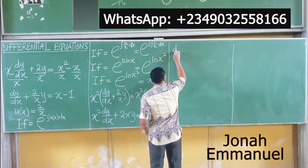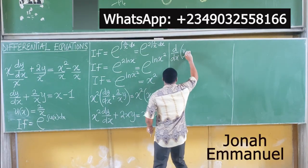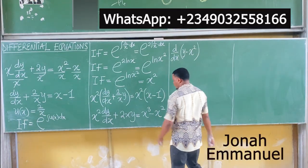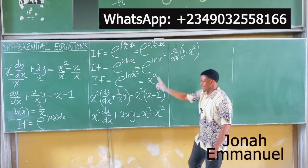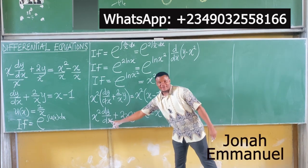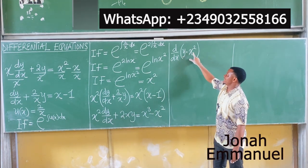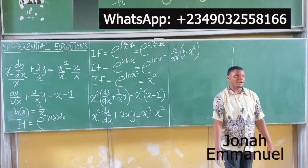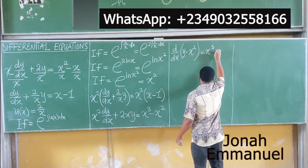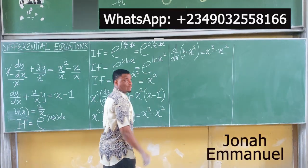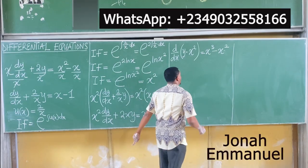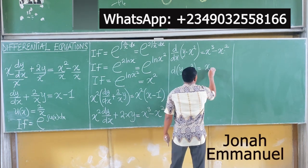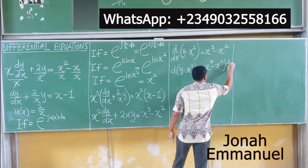For this, we use the concept: the left side is the derivative d/dx of y times the integrating factor, which is x squared. Looking at it: v times du/dx plus u times dv/dx — where u is y and differentiating x squared gives 2x — so d/dx of y times x squared equals x cubed minus x squared. Now move dx over: d(y · x²) equals x cubed minus x squared dx.